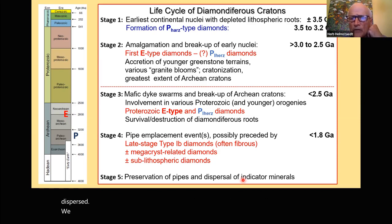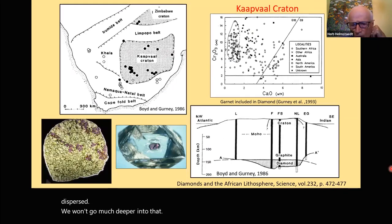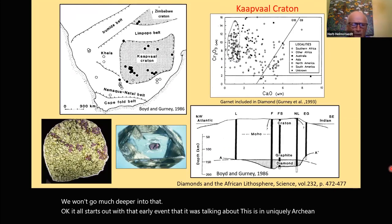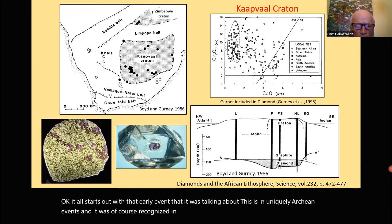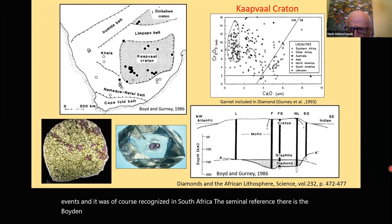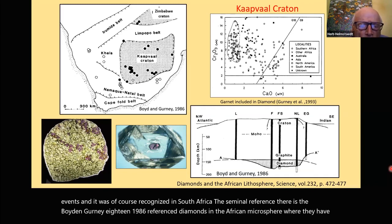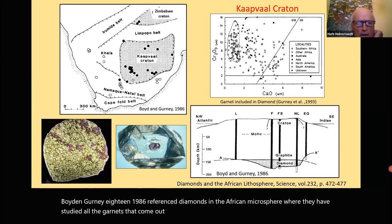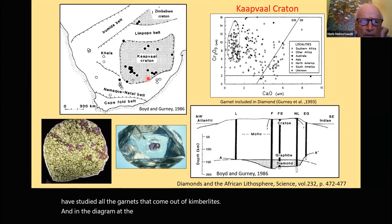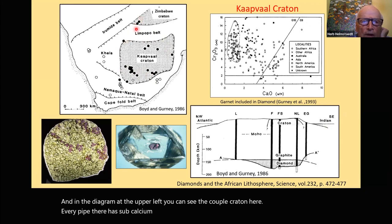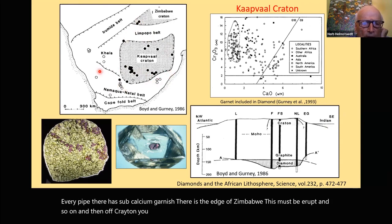The seminal reference is Boyd and Gurney 1986, 'Diamonds in the African lithosphere,' where they studied all the garnets coming out of kimberlites. In their diagram, the Kaapvaal Craton shows that every pipe has subcalcic garnets, while off-craton you don't find these garnets. There is a cross-section drawn from across Southern Africa, showing what became the type example of a lithospheric root.